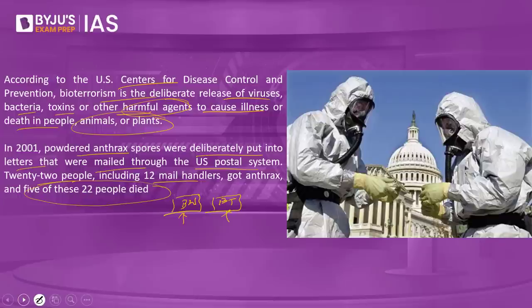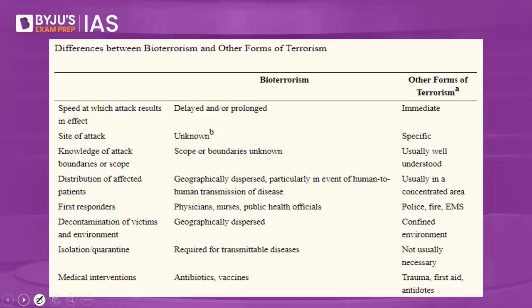Why do terrorists prefer bioterrorism over other tools? Terrorists use biological agents because they are difficult to detect — people may think it is just any other disease and not realize it was released deliberately. Some have also alleged that COVID-19 is a result of bioterrorism planted by another country, though these are allegations yet to be proved. Biological agents can be used by states or terrorists as a method of creating mass panic in a country.